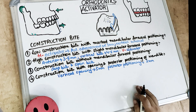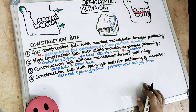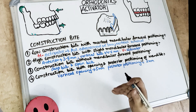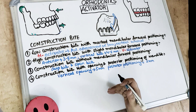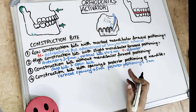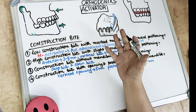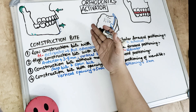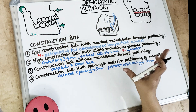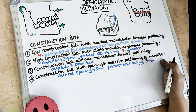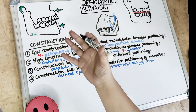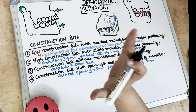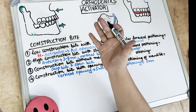Before we get started, make sure you subscribe to this channel and click on the bell icon so that you get a notification as soon as I release a video lecture. Now coming to the construction bite: as we all know about the activator, it is primarily used for the forward positioning of the mandible, but it can also be used for posterior positioning of the mandible in cases of Class 3 malocclusion when the mandible is protruded.